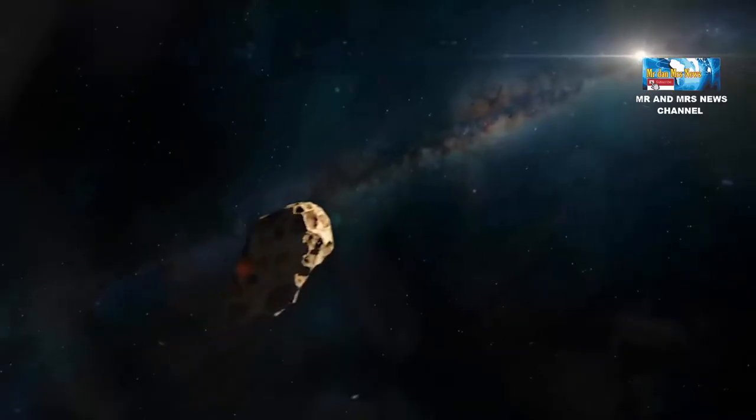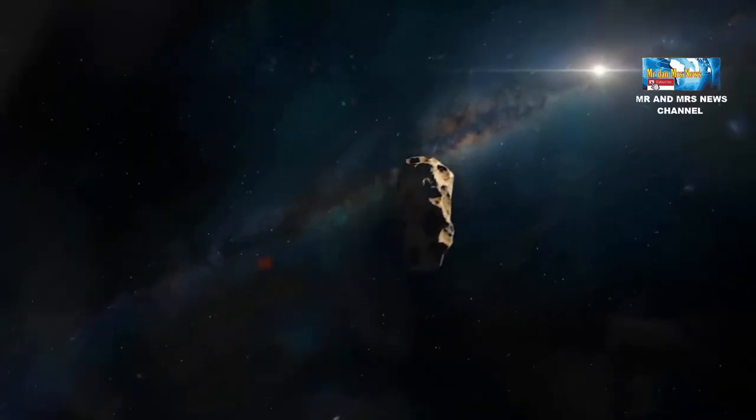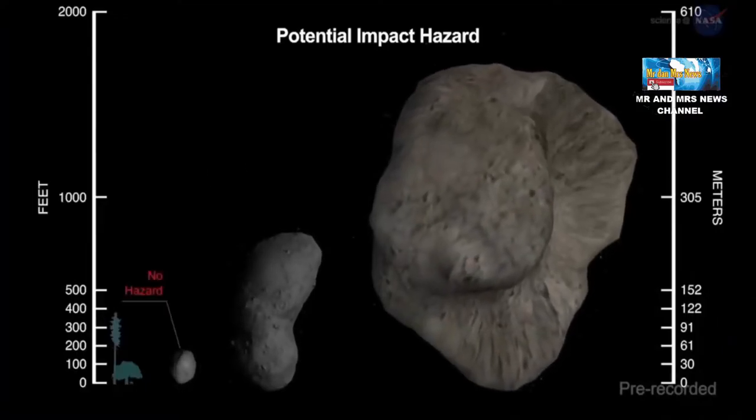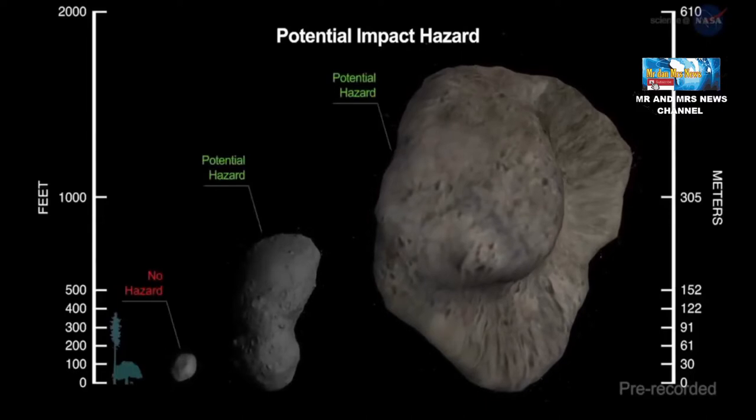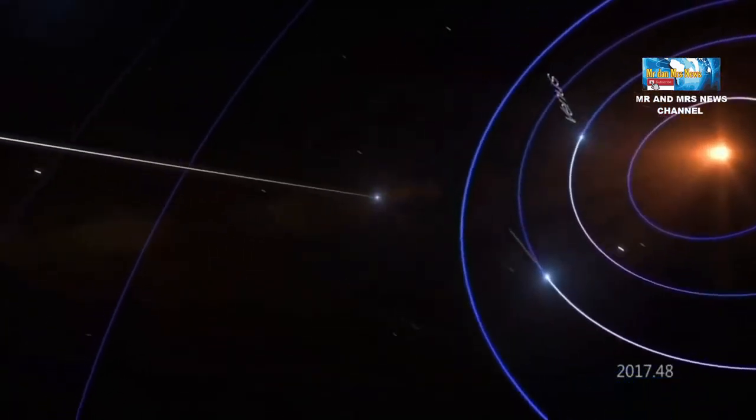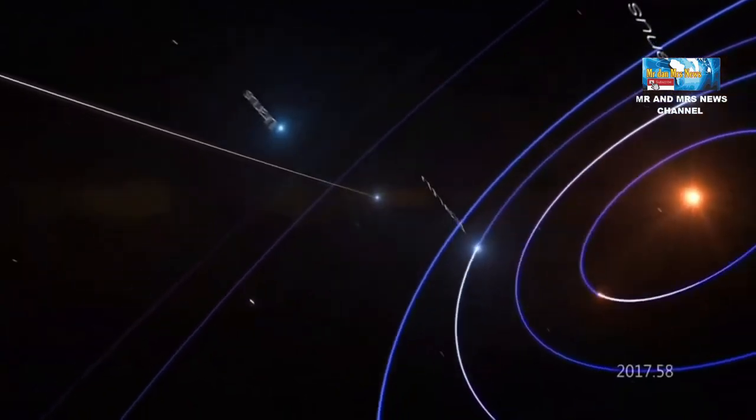The enormous size of asteroid 2001CB21 places it in the classification of potentially hazardous objects to Earth. Being larger than 97% of other asteroids is terrifying if it approaches closely. This classification is based on NASA's Center for Near Earth Object Study, or CNEOS.